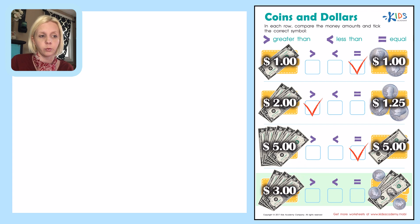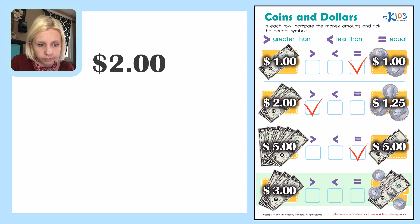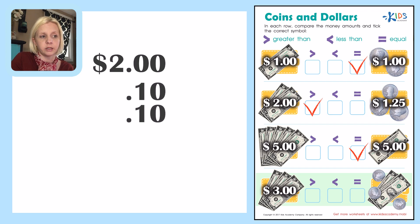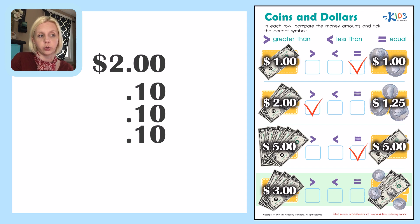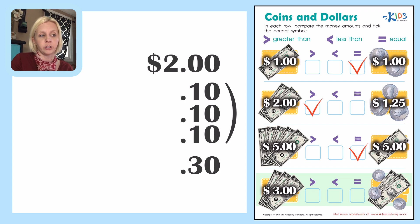The last one: on the left we count one, two, three dollars. On the right we have two dollars plus some coins. There are three dimes, each equal to 10 cents, so we add 10 cents plus 10 cents plus 10 cents. We can count by tens: 10, 20, 30 — so all those coins equal 30 cents.